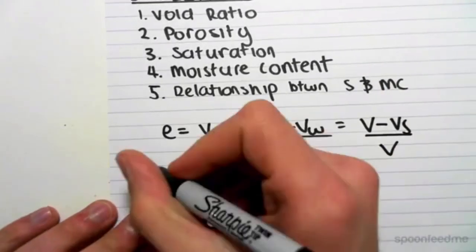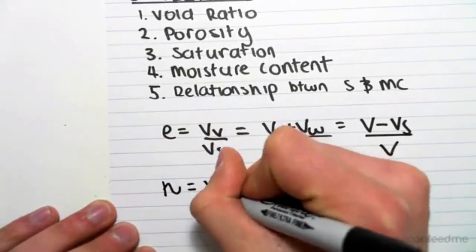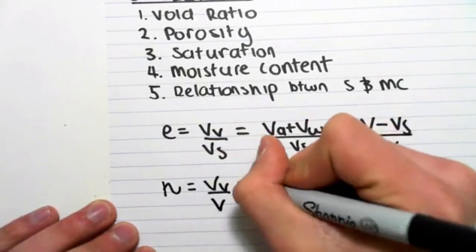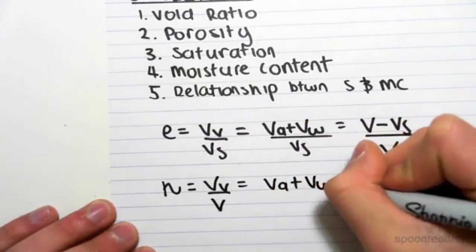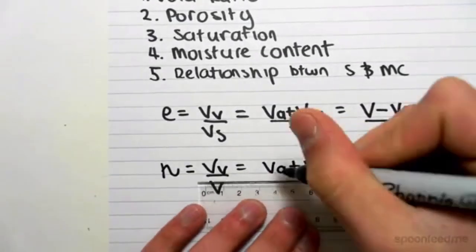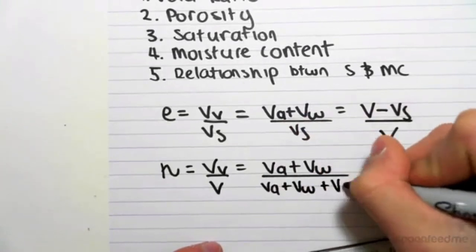The porosity is given by the letter N, which equals the volume of the voids on the total volume. So if we wanted to break that up, that would be the volume of the air plus the volume of the water on top of the volume of the air plus the volume of the water plus the volume of the solids.